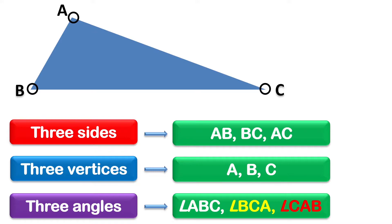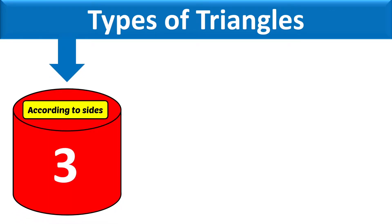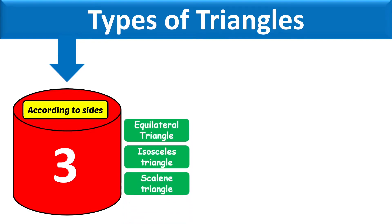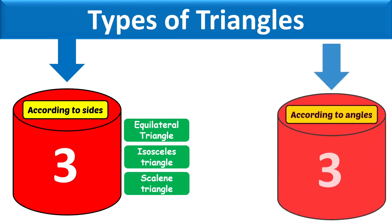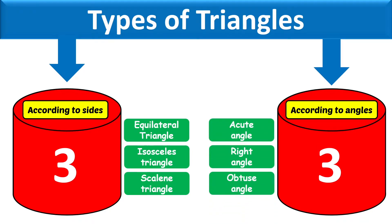Types of triangles: according to size, triangles are of three types — equilateral, isosceles, and scalene. According to angles, triangles are again of three types — acute angle, right angle, and obtuse angle. Let us discuss this topic in detail.